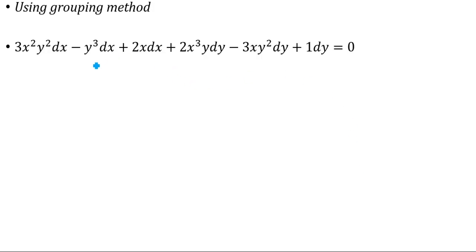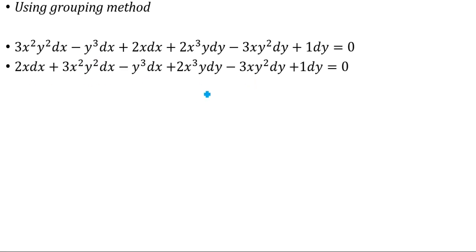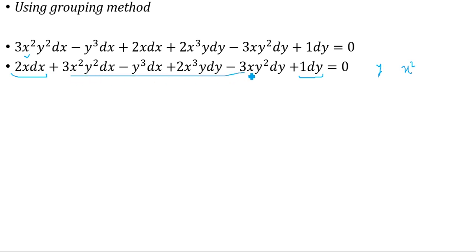Using the grouping method, we open up the bracket with dx — the whole bracket is expanded. We stack terms with only x variables in one group and only y variables in another, with the remaining as partial derivative terms. Here, 2x is the derivative of x², and 1 is the derivative of y. So we have y and x² as separate terms. The remaining terms are: 3x²y², y³, 2x³y, and 3xy².